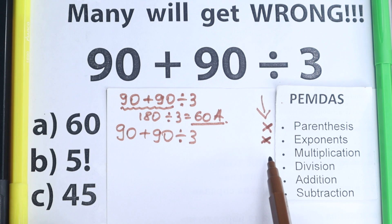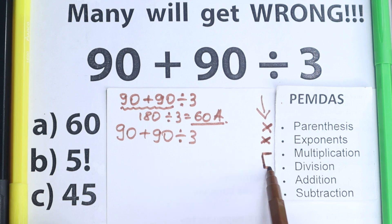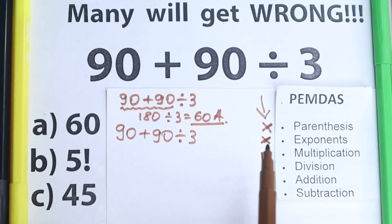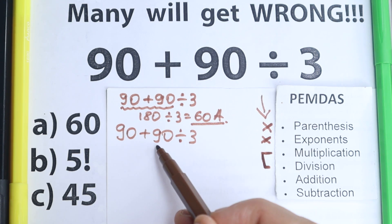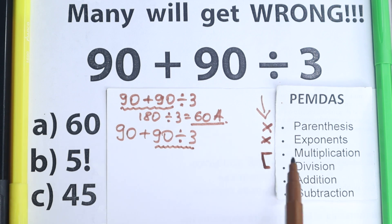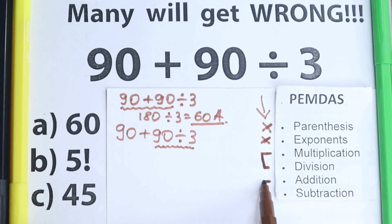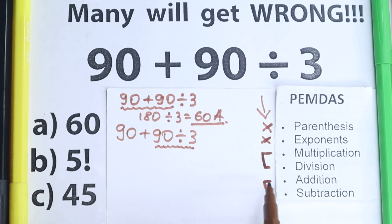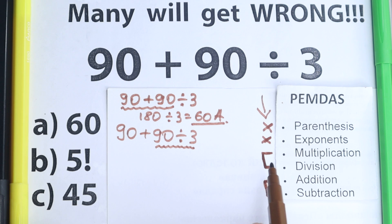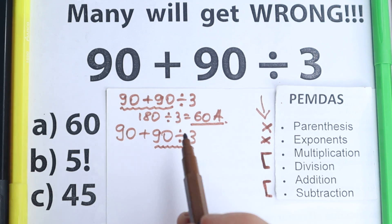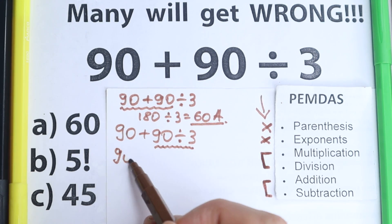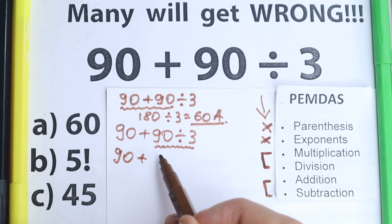The next step is multiplication. Most students make a common mistake here: according to PMDMC, multiplication and division are one common group. So we scan for multiplication and division. We see addition — that's not what we're looking for. But right here we have division. Addition and subtraction come last, so division is the previous step before addition. We need to divide before we add: 90 divided by 3 equals 30.